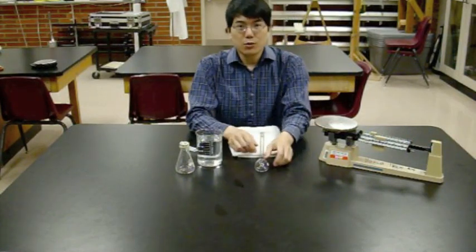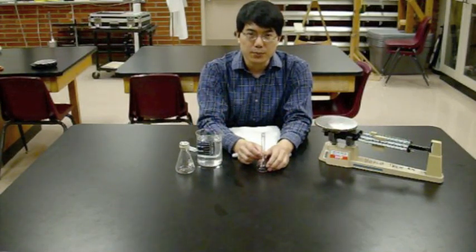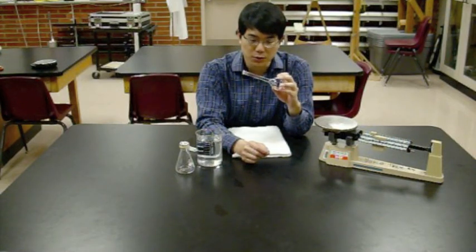The other thing to remember is that you want to measure the mass of 50 milliliters of water, not the mass of 50 milliliters of water plus the glass that makes up the volumetric flask. So we're going to have to subtract out the mass of the volumetric flask.